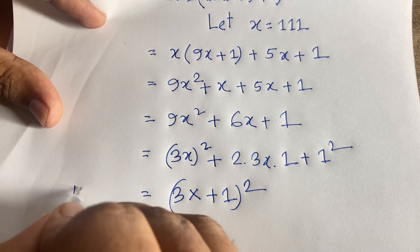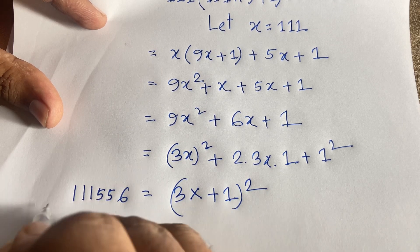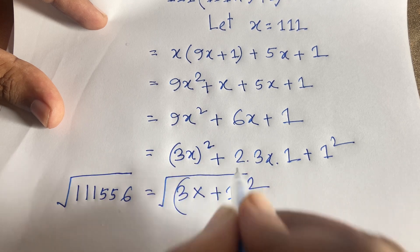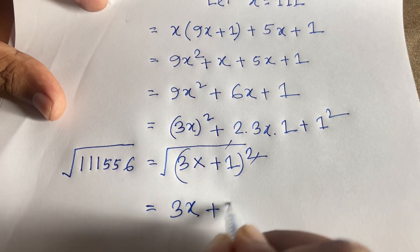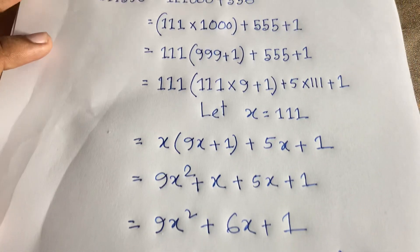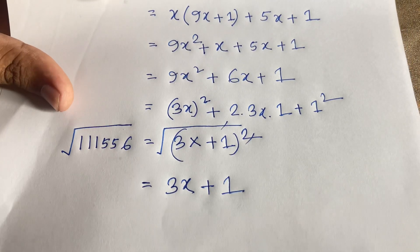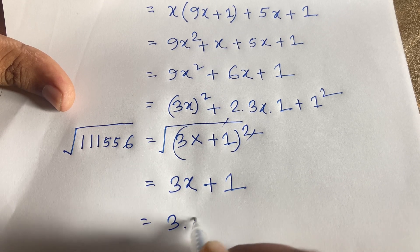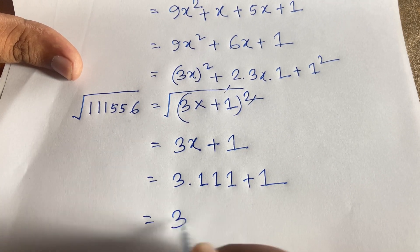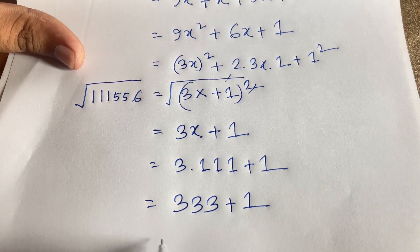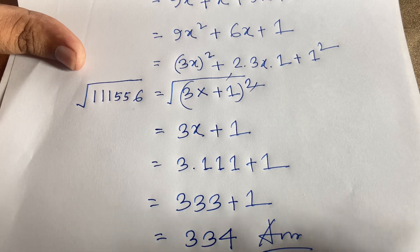So we find that 111556 equals (3x+1)². Applying the square root to both sides, the square and square root cancel. We get 3x + 1. Since x equals 111, we get 3 times 111 plus 1, which is 333 plus 1, equals 334. This is our final answer to this Math Olympiad question.